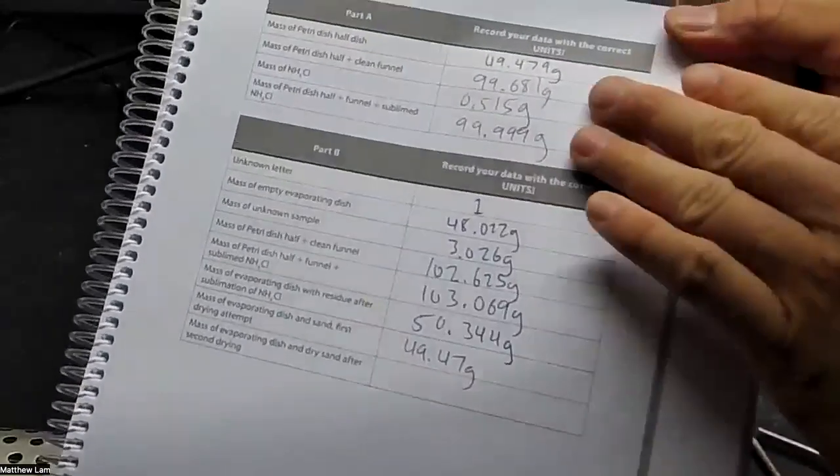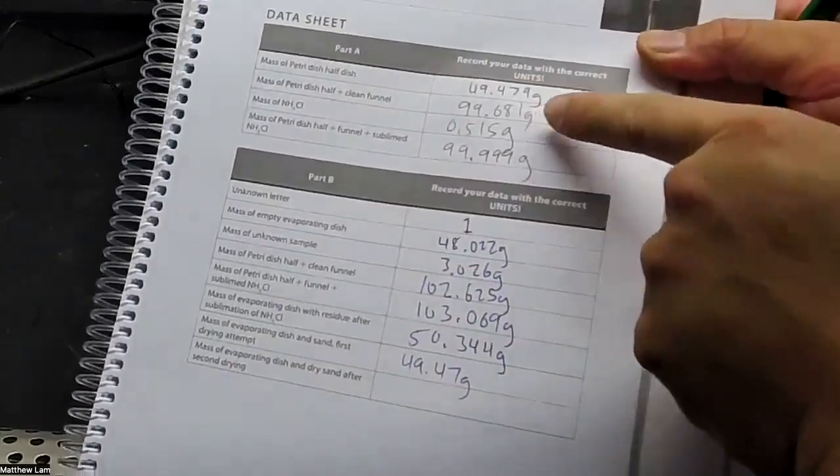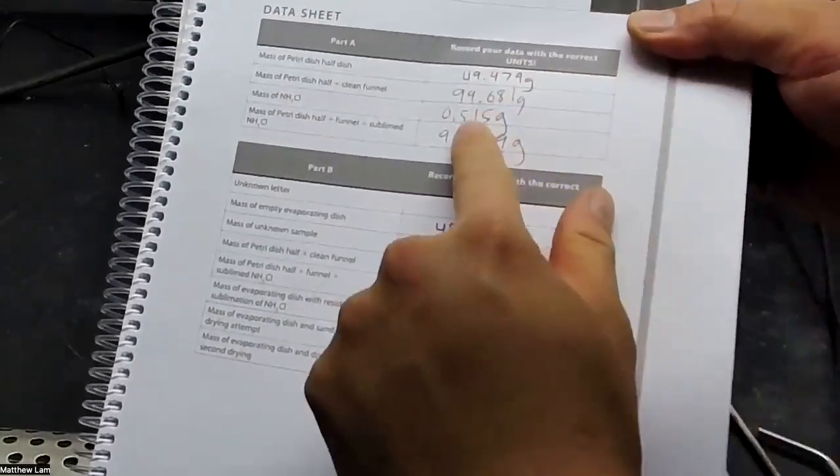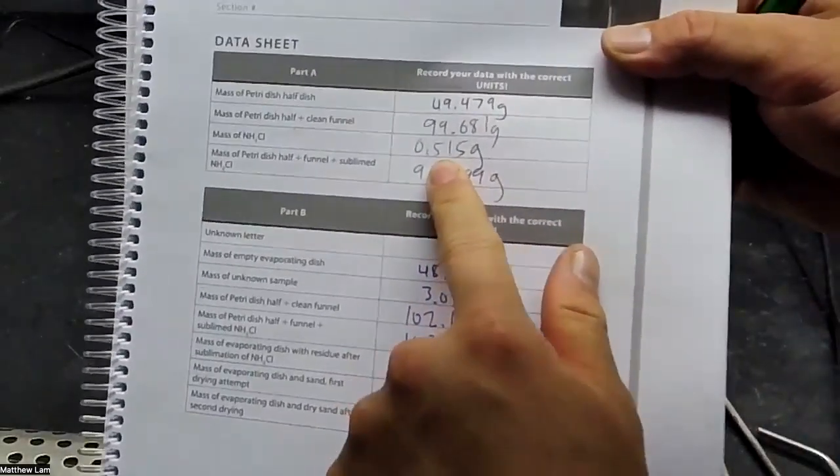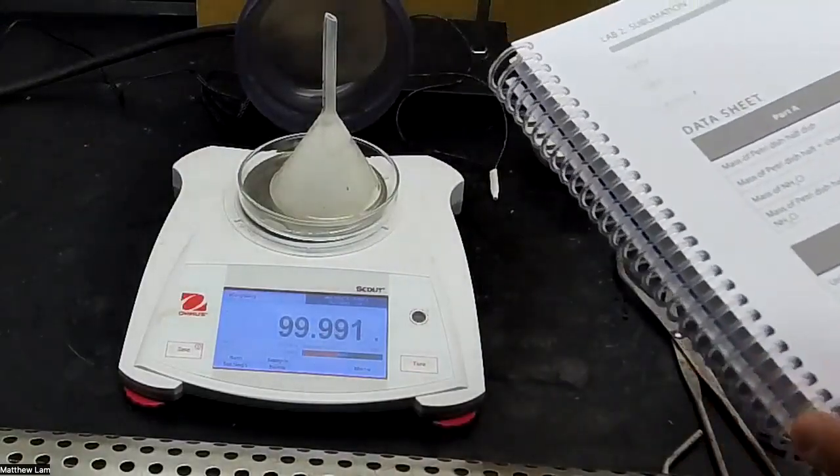So what we recovered was 99.999 minus 99.681 grams. And that's how much ammonium chloride we recovered. We can do a percent recovery by taking that difference and dividing by the initial mass that we used and multiplying by 100% to determine the percent recovered.